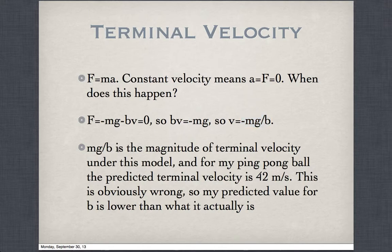mg over b is the magnitude of terminal velocity under this model. For my ping pong ball, the predicted terminal velocity with my values of m equals 0.0027 kilograms, g equals 9.8 meters per second squared, and b equals 0.0068, that predicted terminal velocity is 42 meters per second, which is way too fast and unreasonable.